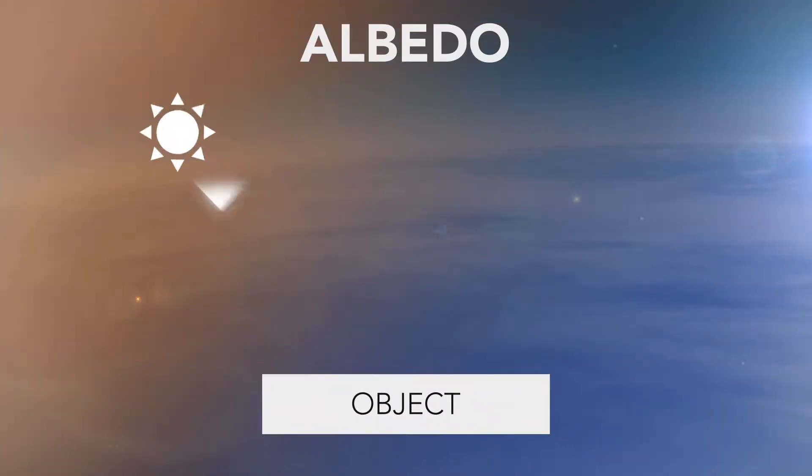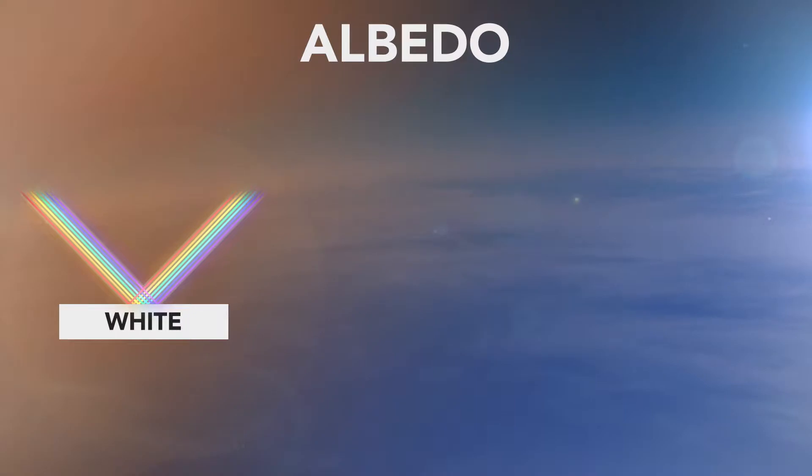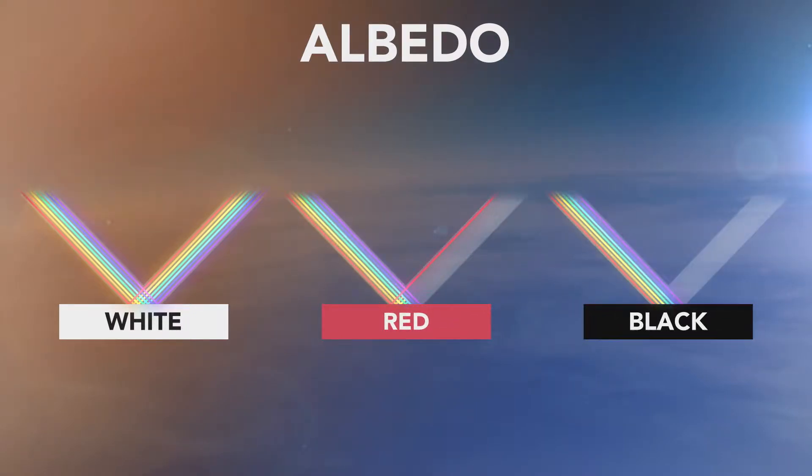The albedo of an object describes how much of the sun's radiation the object reflects back into the atmosphere. For instance, when we see color, what we are observing is how much light is reflected or absorbed by an object.